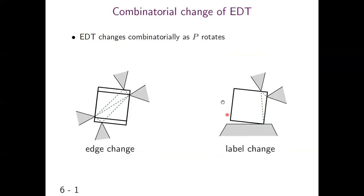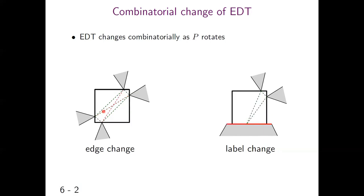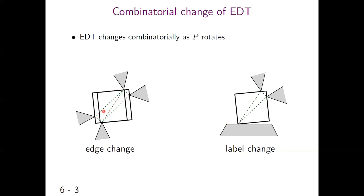Each triangle of EDT can be a candidate for a largest polygon, so we detect all changes of EDT to find a largest polygon. EDT changes when P rotates, as shown in the figures. In the left figure, two dashed triangles in EDT correspond to two squares, so the EDT is a rectangle with a diagonal. When P rotates counterclockwise, the red diagonal in the EDT is flipped. We call this an edge change.